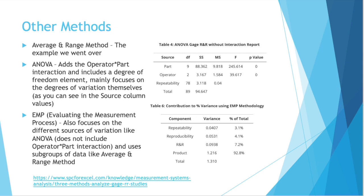EMP, which stands for Evaluating the Measurement Process, also focuses on the different sources of variation like ANOVA, but it does not include the operator part interaction, and it even focuses on subgroups of data like the average and range method. And something to note with ANOVA and EMP is that there are different equations as well, but they are all trying to get to the same underlying idea, how much your measurement system variation affects your measurements.